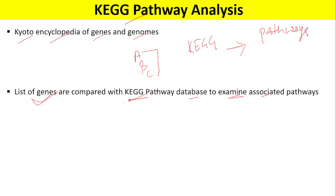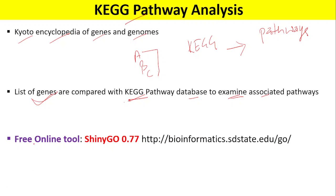One of the freely available online tools for KEGG pathway analysis is ShinyGO 0.77. This tool is accessible online at the website mentioned here, the link for which has also been provided in the description of this video.